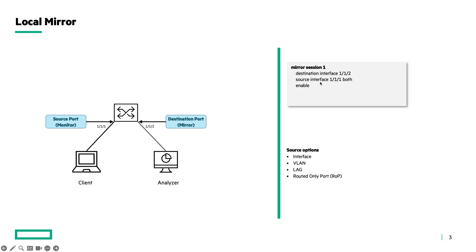Then we have the source interface 1/1/1, followed by the command BOTH. BOTH means both the received traffic on the interface but also the transmitted packets on the interface. It is also possible to specify just the received packets or just the transmitted packets. The last step is to enable the mirror session using the command 'enable'. If you don't specify this command, the mirror session will be disabled, so make sure to enable this one.